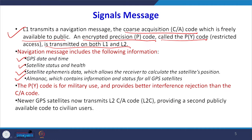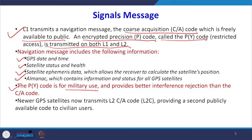Almanac data contains the information and status of all GPS satellites — it is like a star almanac where we get information about the stars. The PY code is used for military purposes because it is very precise and provides better interference rejection than a C/A code, giving better precision in coordinate systems. New GPS satellites now also transmit an L2 C/A code called L2C, which is publicly available to civilian users.